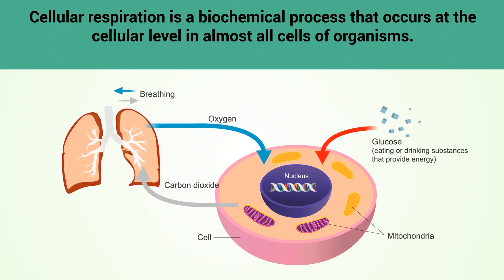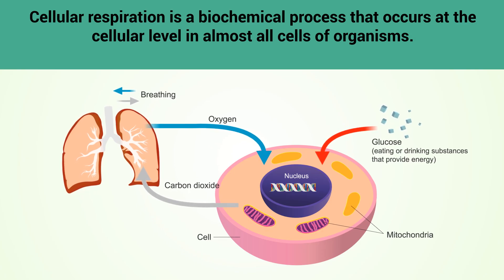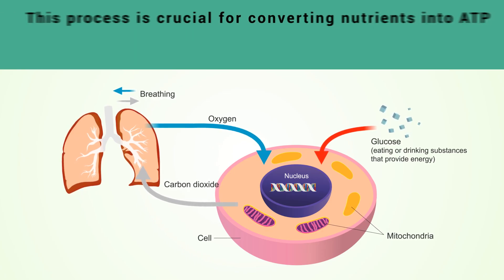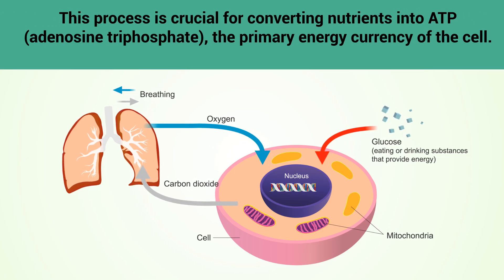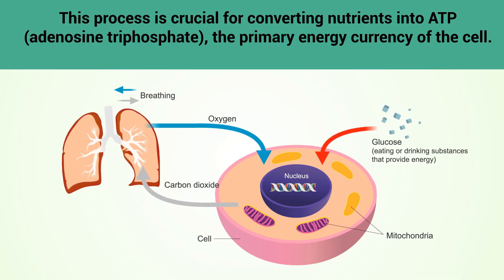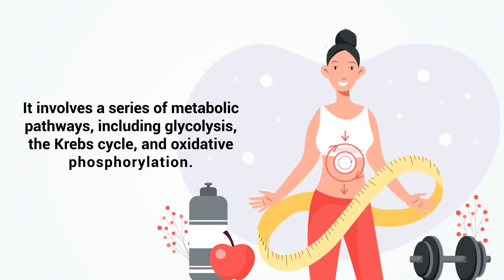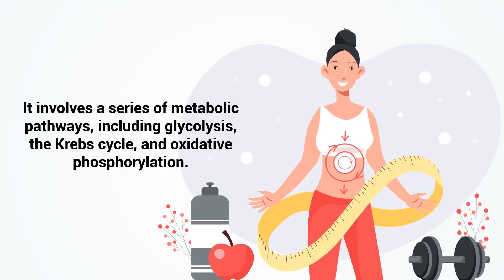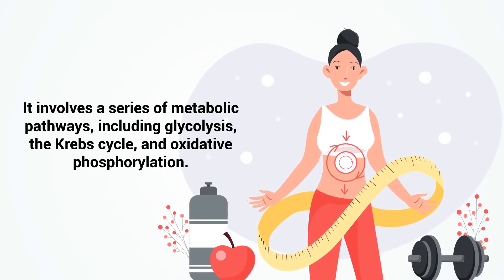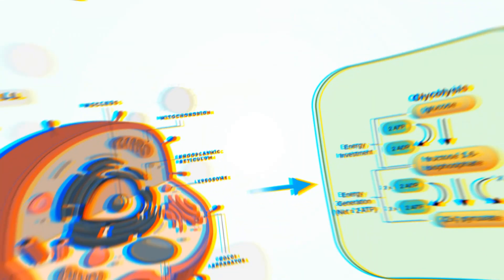Cellular respiration is a biochemical process that occurs at the cellular level in almost all cells of organisms. This process is crucial for converting nutrients into ATP, the primary energy currency of the cell. It involves a series of metabolic pathways including glycolysis, the Krebs cycle, and oxidative phosphorylation.